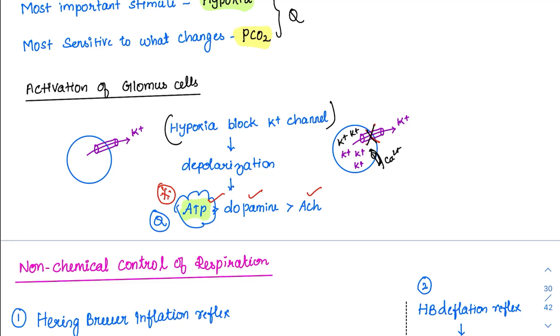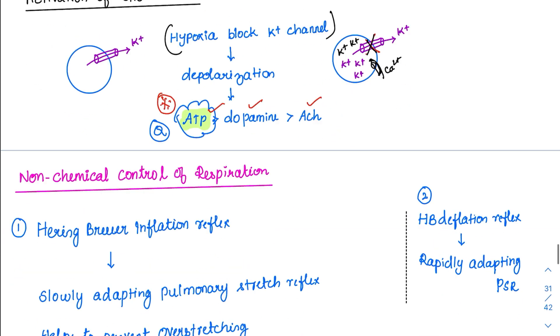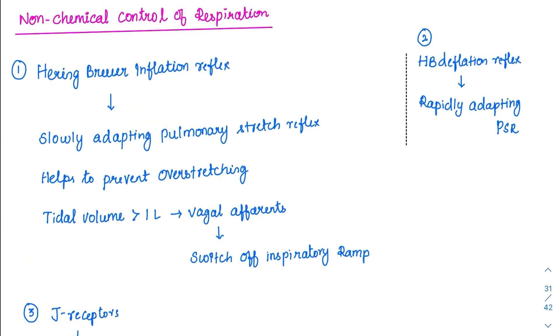There are some non-chemical controls in the body which are called nervous reflexes. So let's talk about some of the reflexes. The most important one is the Hering-Breuer inflation reflex. As the name indicates, this reflex gets activated whenever the inflation is happening. But whenever the inflation goes beyond a limit only, this inflation reflex will happen, not on a day-to-day basis.